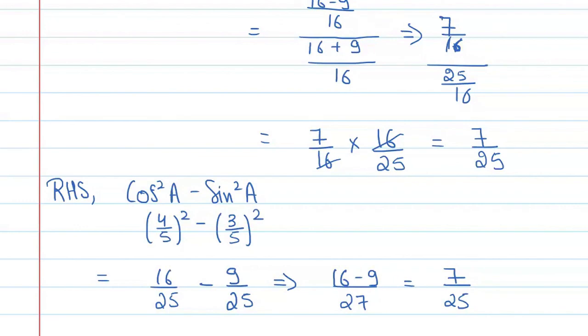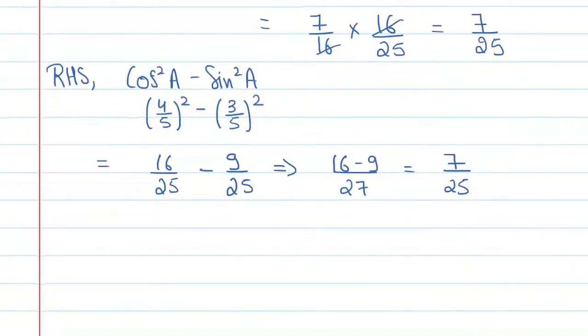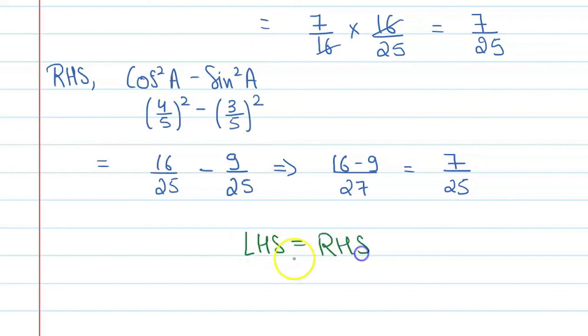Left-hand side and right-hand side are equal, both giving 7 upon 25. Hence verified. I hope your doubt is clear with this video.